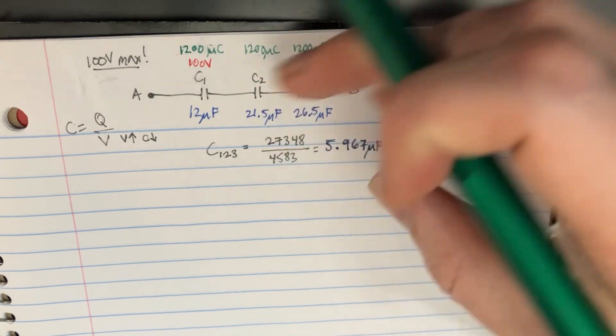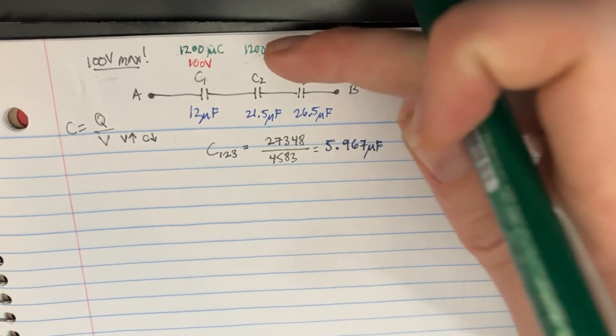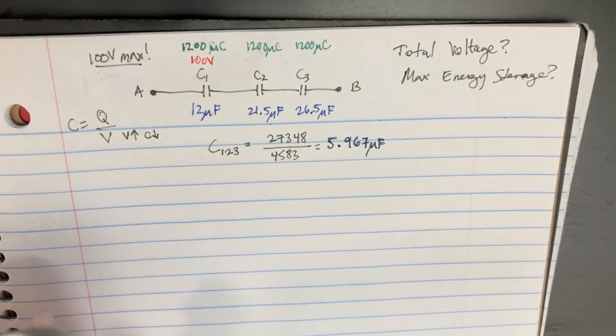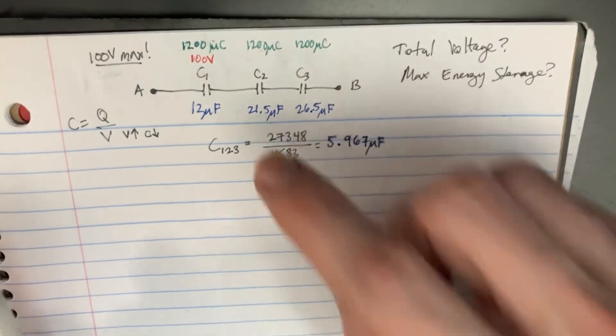And because we now know the voltage, the charge, we can figure out the voltage. So we're just going to divide 1,200 by 21.